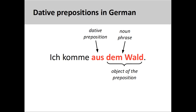Dative prepositional phrases function in the same manner with the exception that they have a dative object. Here the object of 'aus,' meaning 'out of,' is 'dem Wald,' with the definite article 'dem' indicating the dative case.